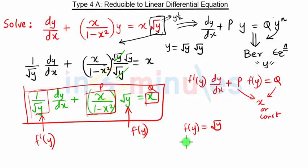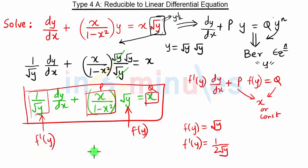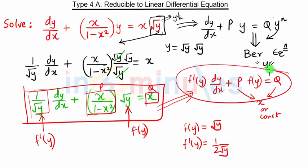So our f(y) is √y. If I take the derivative of √y, that is 1/(2√y). If I divide by 2, it will satisfy this equation. So our equation is of this reducible form, and whenever it is, we substitute f(y) = u.